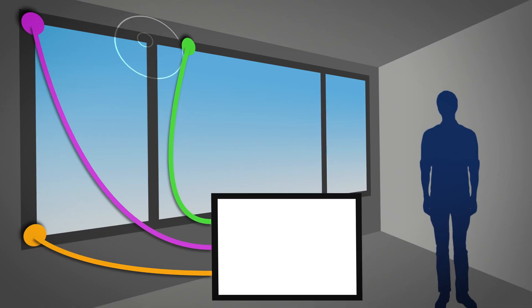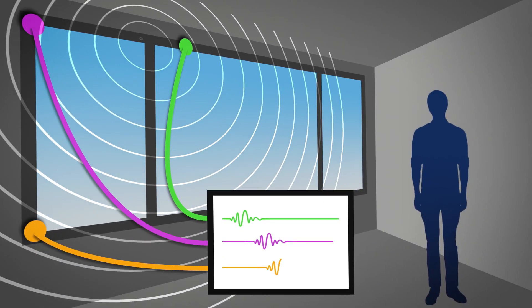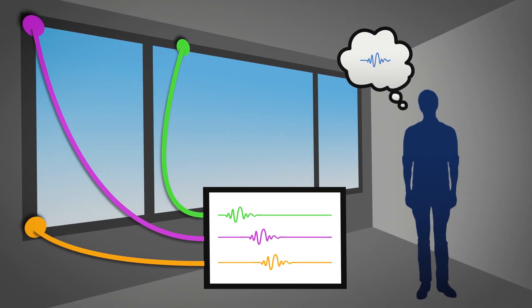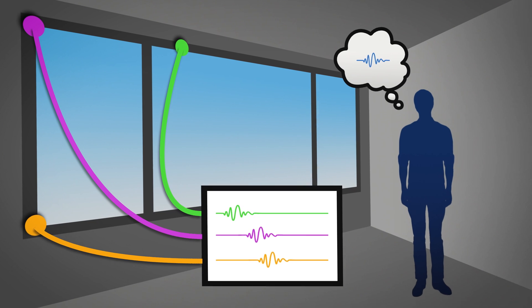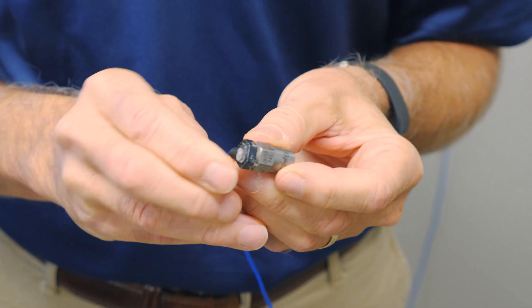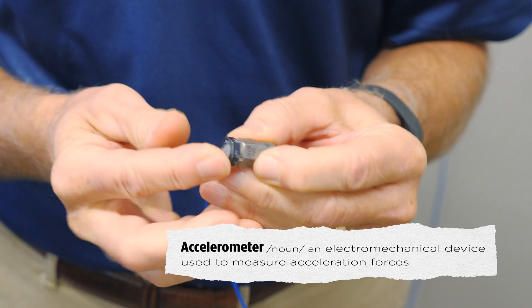All of these projects involve instrumentation in the field, in the actual structure where the noises occur. The impulse that produces the audible noise also produces vibrations that are traveling within the frame of the building, and that allows us to track it to the source with accelerometers.